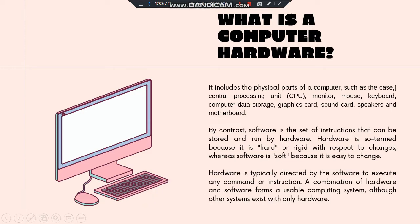What is a Computer Hardware? A Computer Hardware includes the physical part of computer such as the case, or the central processing unit, monitor, mouse, keyboard, computer data storage, graphics card, sound card, speakers, and motherboard. By contrast, software is a set of instructions that can be stored and run by hardware.